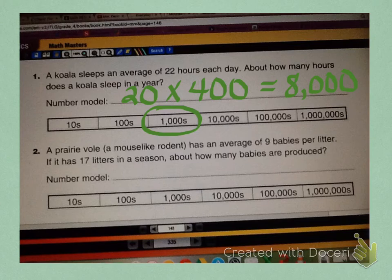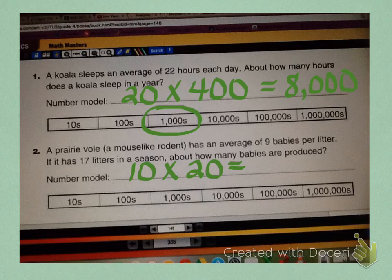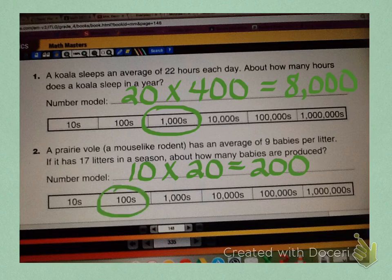Let's take a look at the next problem. A prairie vole, which is a mouse-like rodent, has an average of 9 babies per litter. If it has 17 litters in a season, about how many babies are produced? So our number model would look something like this, 10 times 20. And where I got my 10 was I took the 9 babies per litter, and I rounded that to 10. And the 17, I rounded to 20. And when I multiply that out, I'm going to get 200. So in this instance, my answer is going to be in the hundreds. So I'm going to circle hundreds.